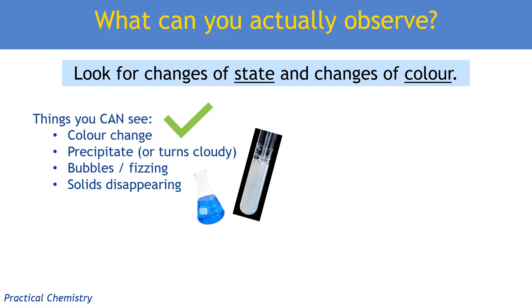Now, you may think that the word disappearing seems a little bit imprecise, but we'll explain why we use the word disappearing in a moment. You can also sometimes see movement, for example group one metals will move across the surface of water, but that's not a particularly common one. So those are all perfectly good explanations of what you can see in a practical.